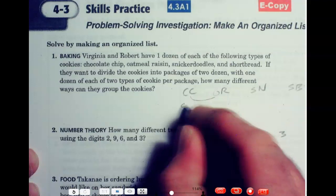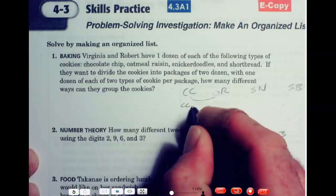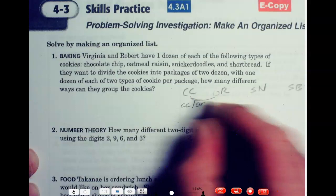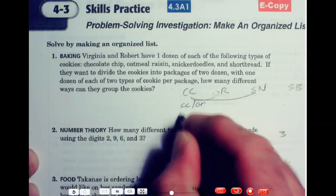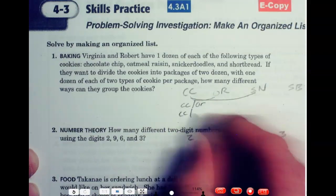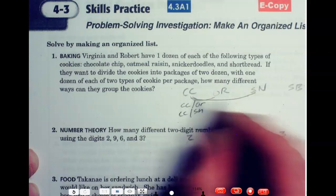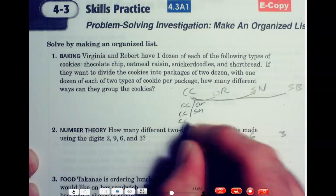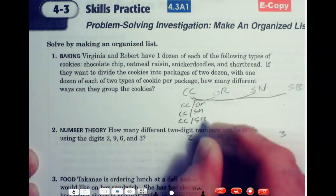You could have cookies, you could have chocolate chip and oatmeal raisin. You could have chocolate chip and snickerdoodles. You could have chocolate chip and shortbread. So those are three different ways.